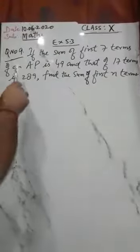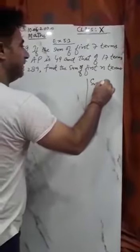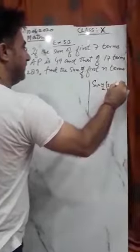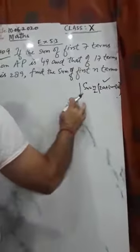Good morning students. In this video we are going to solve question number 9 of exercise 5.3. The formula S_n you are going to use is: n by 2 into [2a plus (n minus 1) into d]. Please remember and memorize the formula. So if the sum of first seven terms is given as 49, and the sum of first 17 terms is given as 289, find the sum of first n terms.